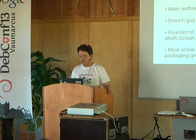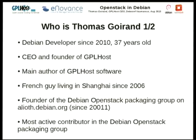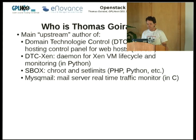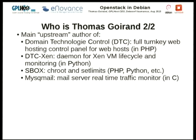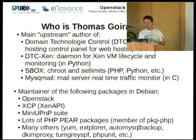So who am I? I'm 30 years old. I'm the founder of GPL Host, which does hosting all around the world. I'm a French guy living in China. I'm the founder of the OpenStack packaging group on Alioth. I've been involved in packaging OpenStack since the Cactus release, which was after it was one year old. I'm currently the most — if not the only — active maintainer of OpenStack in Debian.